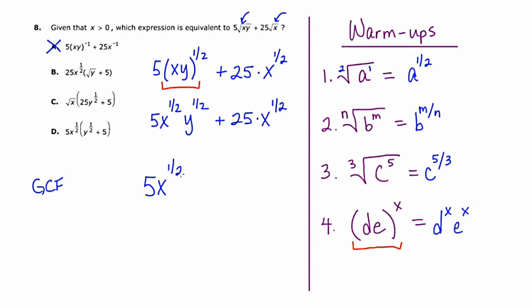And remember to take out means to divide. And if I divide out a five x to the one half from the first term, I'm left with y to the one half. And if I take out a five x to the one half from the second term, I'm left with just five. And this is very promising, because this is one of our answer choices. This is actually answer choice D.